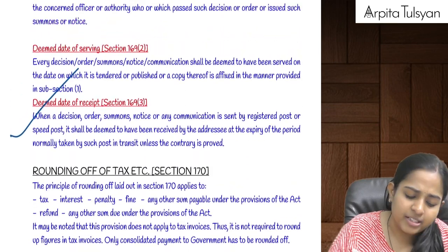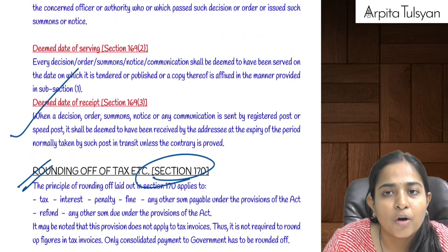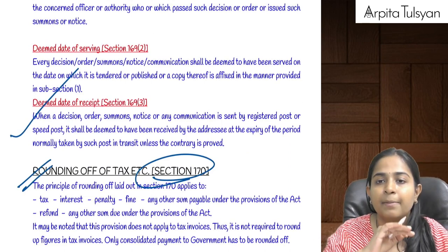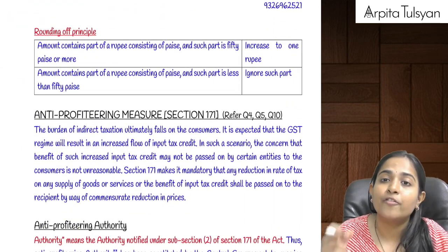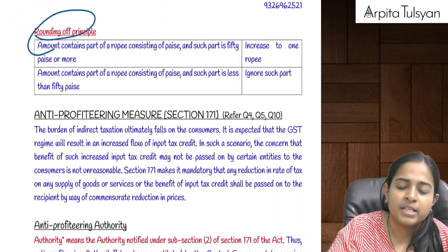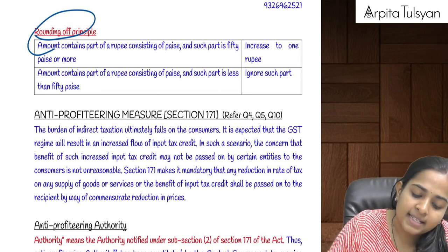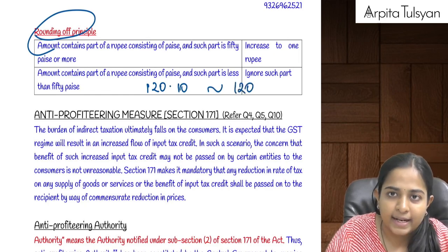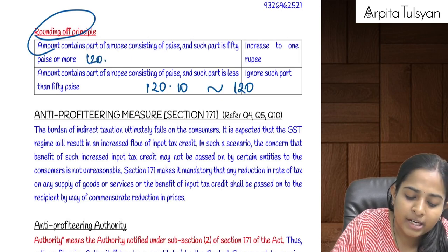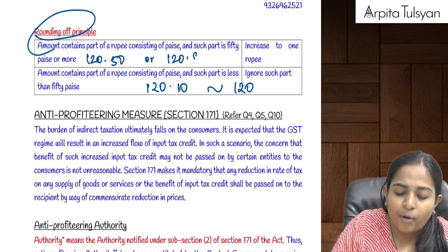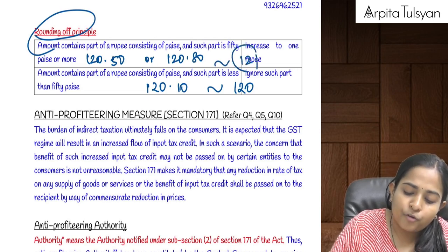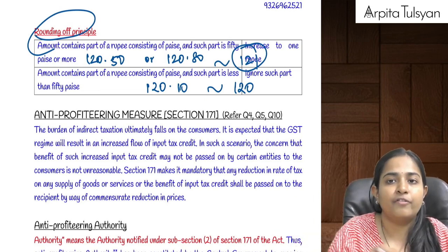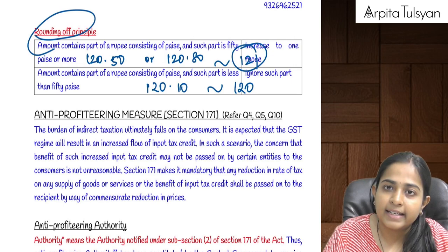The next provision covers rounding off of tax. When making payment of tax to the government, follow the rounding-off principle. If the tax amount is ₹120.10, round off to ₹120. If it is ₹120.50 or ₹120.80, round off to ₹121. So 50 paise or above rounds to the higher side, and less than 50 paise rounds to the lower side. In invoices, decimals can be retained — this rounding off applies only to tax payments.